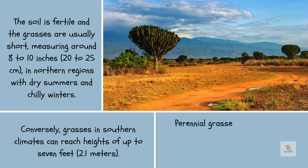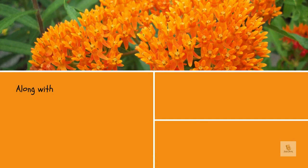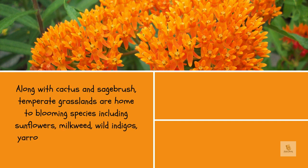Perennial grasses, buffalo grass, blue grama, and purple needlegrass are the common grasses found in temperate grasslands. Along with cactus and sagebrush, temperate grasslands are home to blooming species including sunflowers, milkweed, wild indigos, yarrow, coneflowers, and goldenrods.